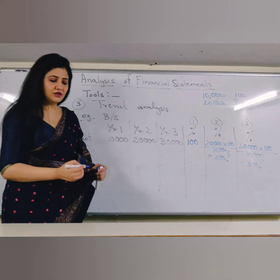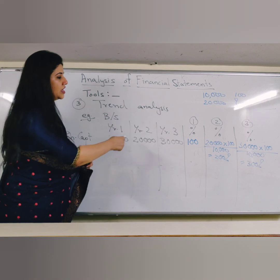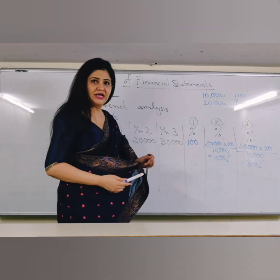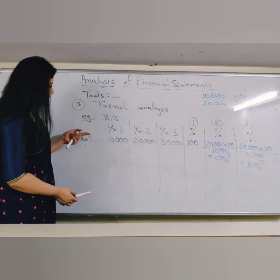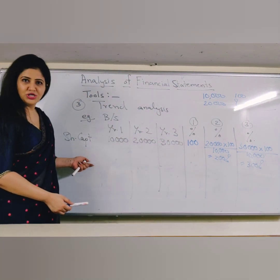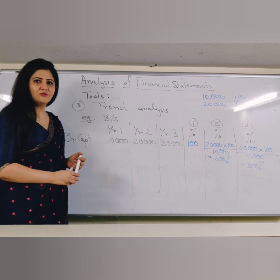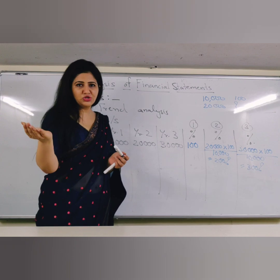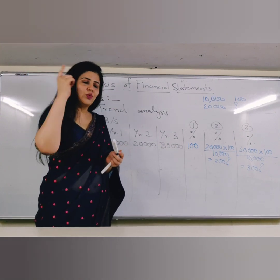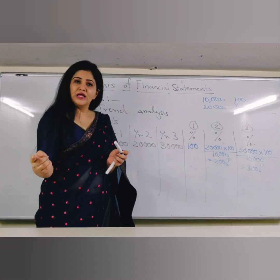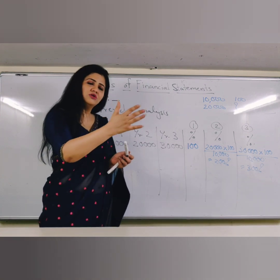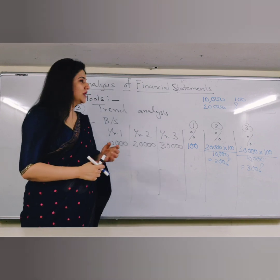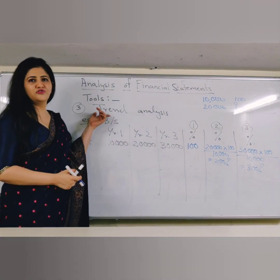So we can clearly see that this share capital is having an increasing trend of 100% to 200% to 300%. Similarly, we will find out the trend for each and every item of the balance sheet and each and every item of the income statement. Based on this trend, we can also have a graphical presentation showing the trend line, whether it is increasing or decreasing, and on those graphs we can have the interpretations. I hope you are very clear with how to calculate trend analysis.